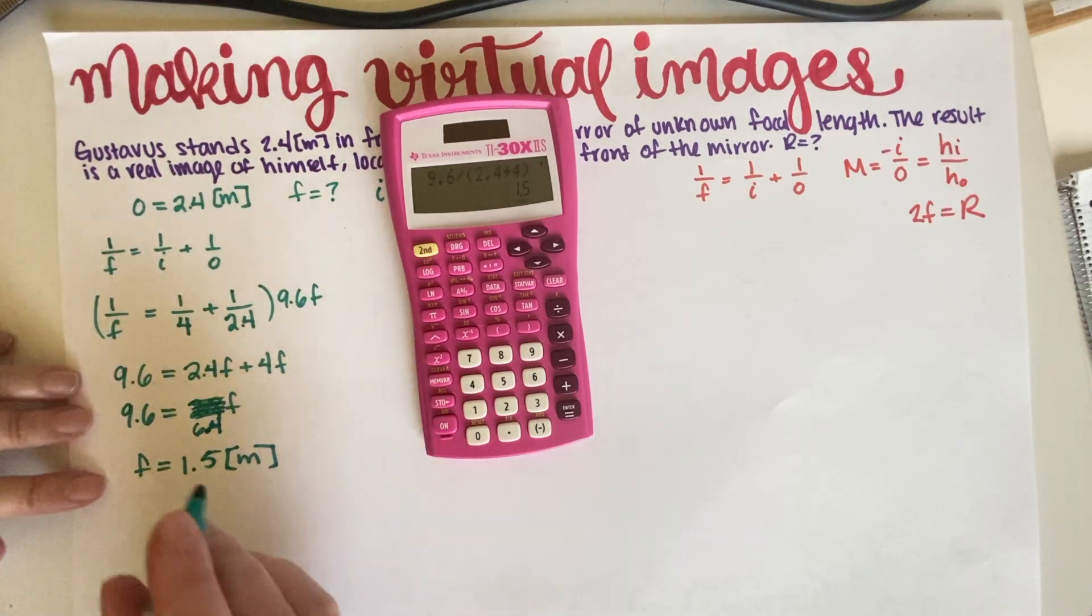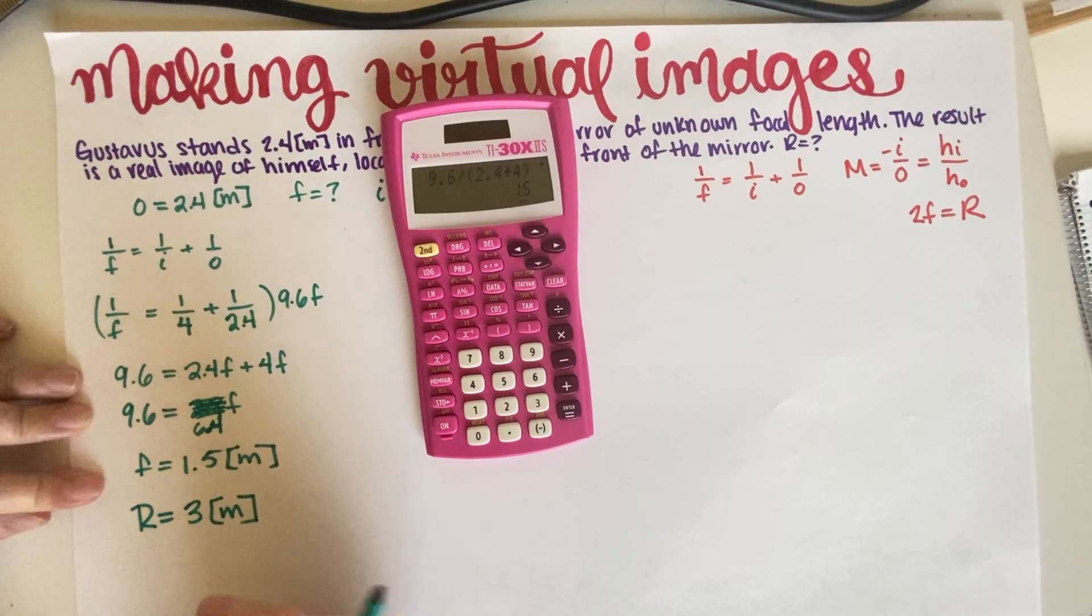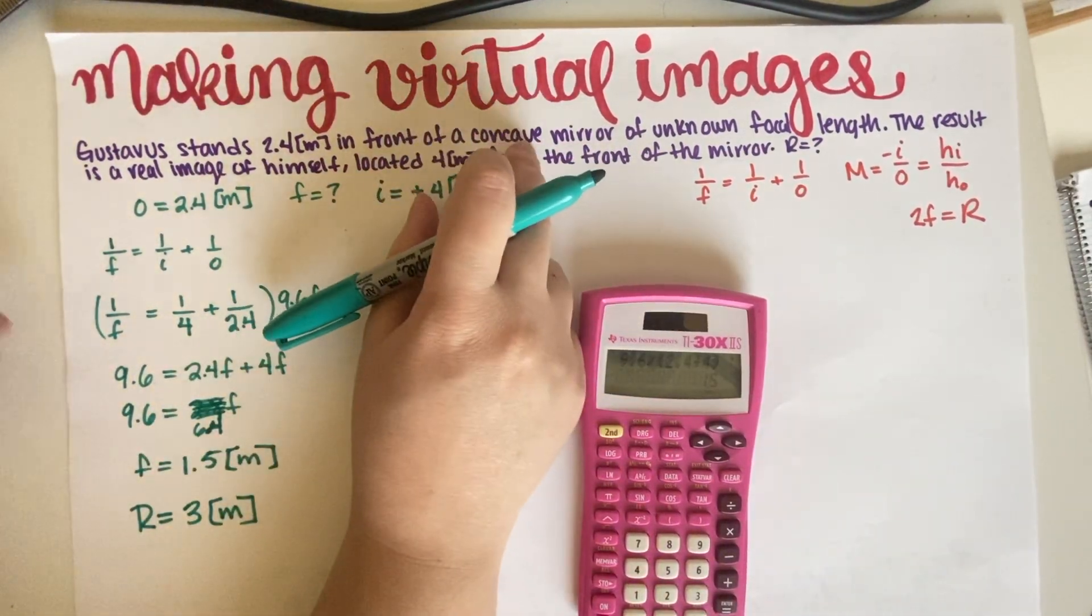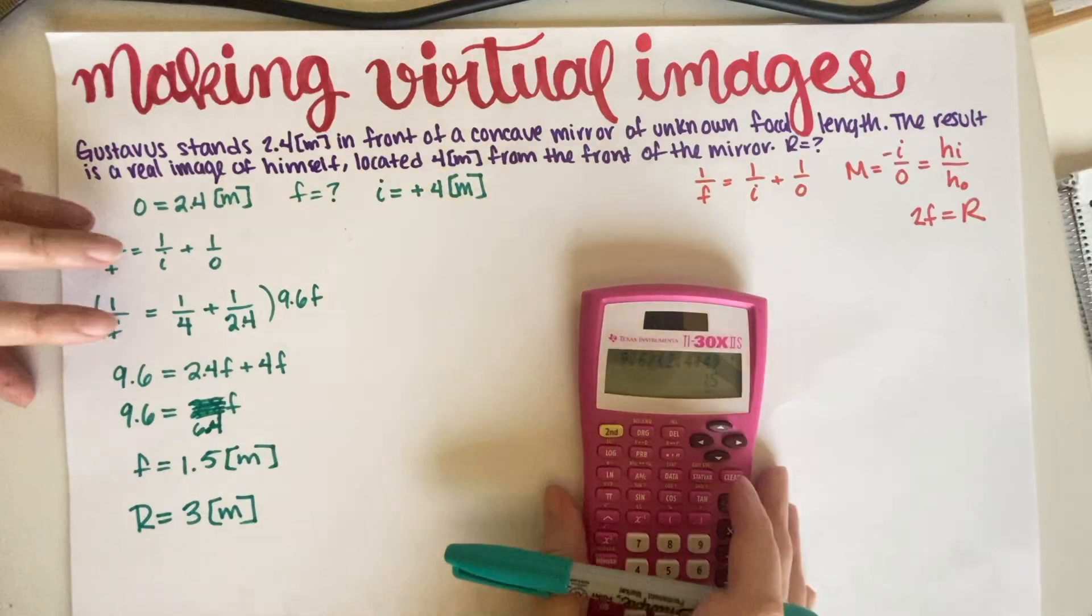And if this is 1.5, then that means that our R is equal to 3 meters. I also like that we got a positive number because by instructions, this is concave and concave mirrors are always positive. So that is good reassurance that we did this right.